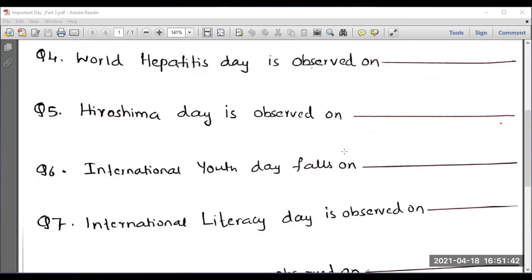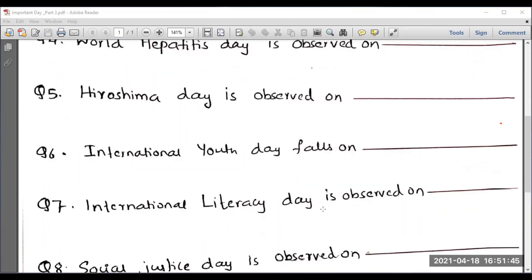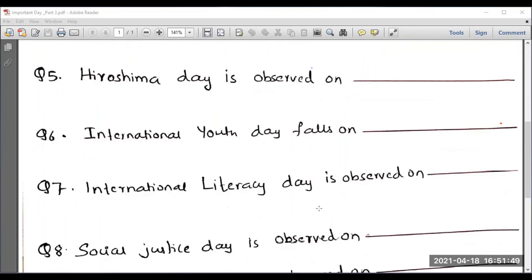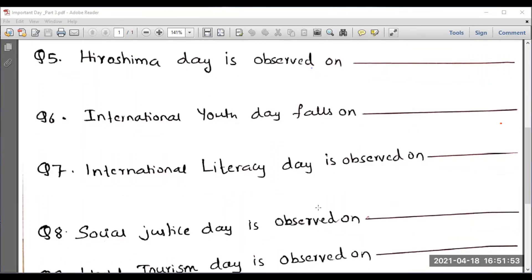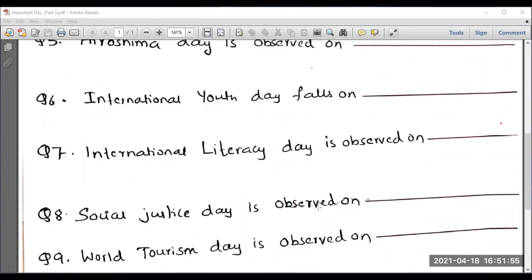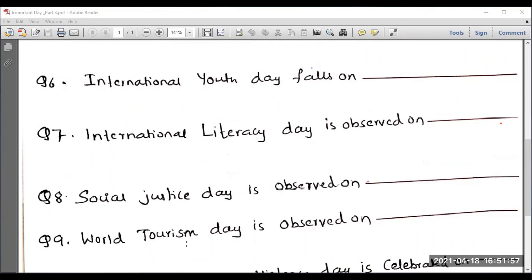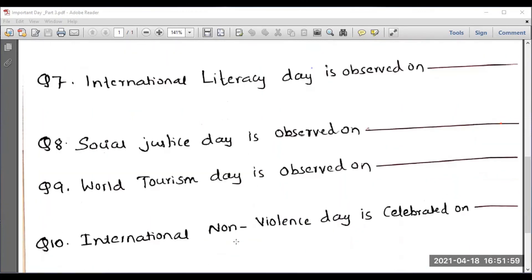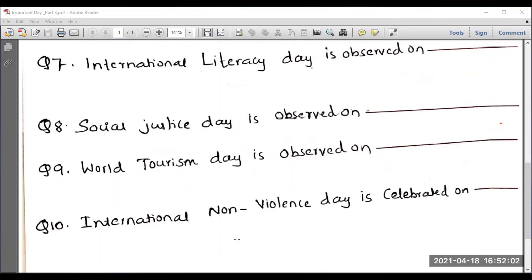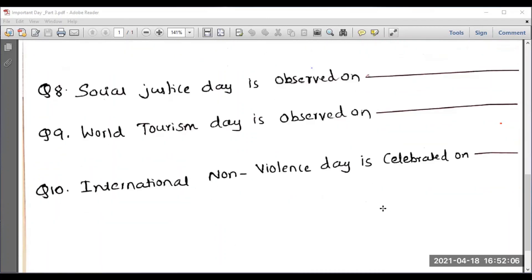International Youth Day falls on 12th August. International Literacy Day is observed on 8th September. Social Justice Day is observed on 25th September. World Tourism Day falls on 27th September.